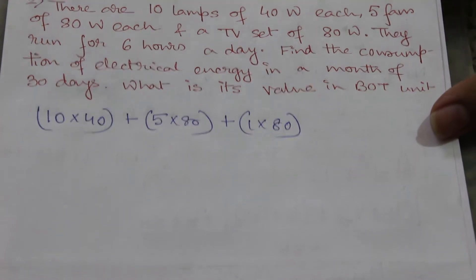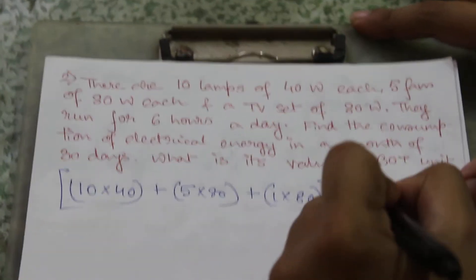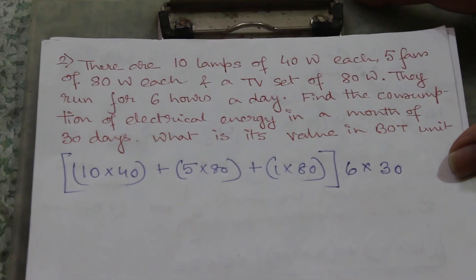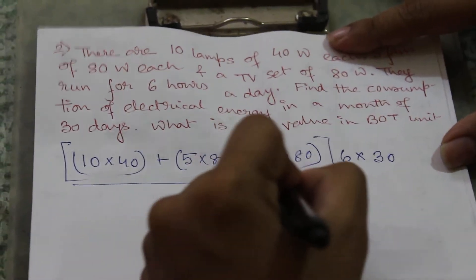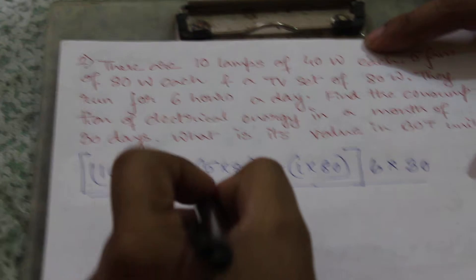So this is the total wattage. It runs for six hours a day and 30 days in a month. So this is the total calculation of the power consumption.